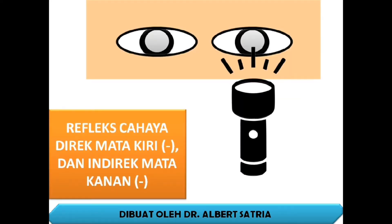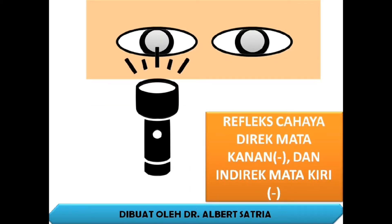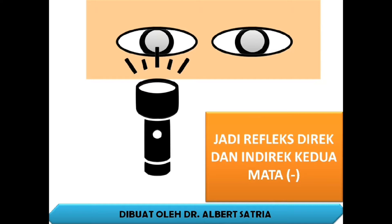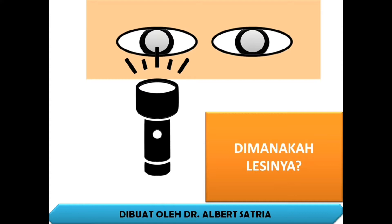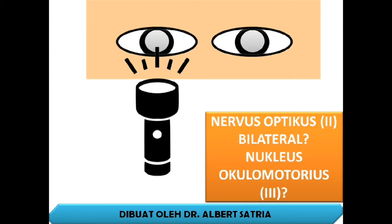Kasus ketiga: refleks cahaya direct mata kiri negatif dan indirect mata kanan negatif. Refleks cahaya direct mata kanan negatif dan indirect mata kiri negatif. Jadi refleks direct dan indirect kedua mata negatif. Di manakah lesinya? Kemungkinan nervus optikus bilateral atau nukleus oculomotorius.